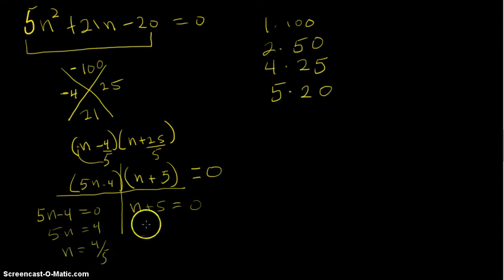One solution, and this one is easy. You just subtract 5 from both sides, giving us n is equal to negative 5. And we have two solutions for this quadratic equation. I hope that helps.